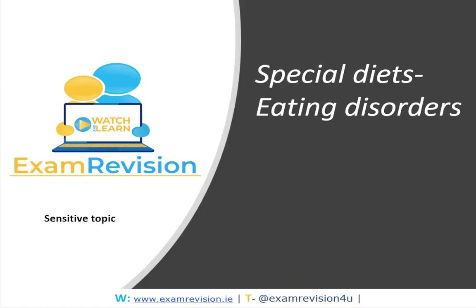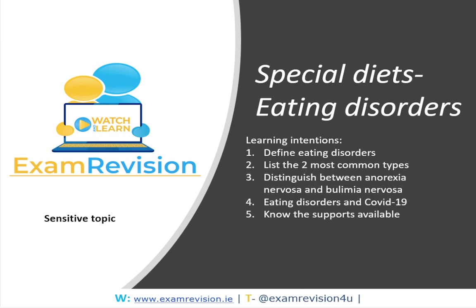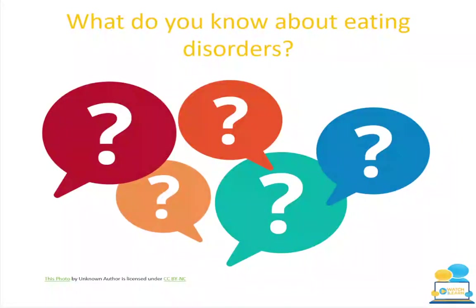Learning intentions for eating disorders include defining eating disorders, listing the two most common types, distinguishing between anorexia nervosa and bulimia nervosa, looking at eating disorders and COVID-19, and knowing available supports. I remind students this is a sensitive topic and we must be careful of language and terminology. Students write what they know in one colour, then add new learning in another colour at the end.